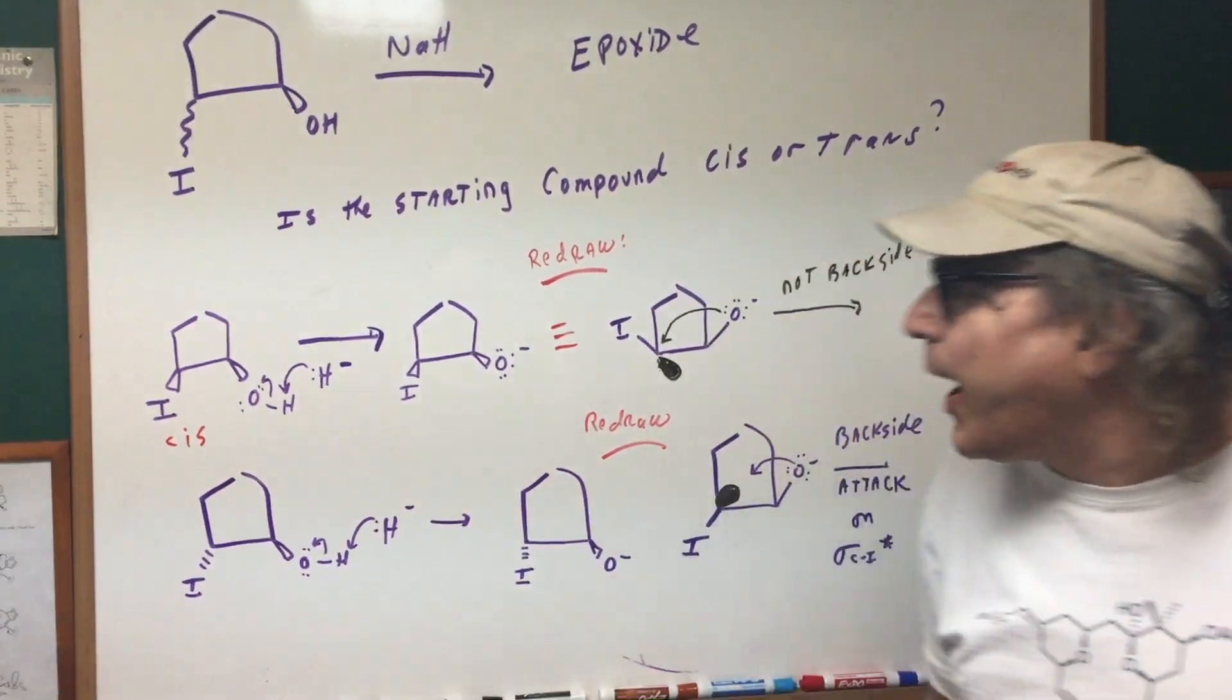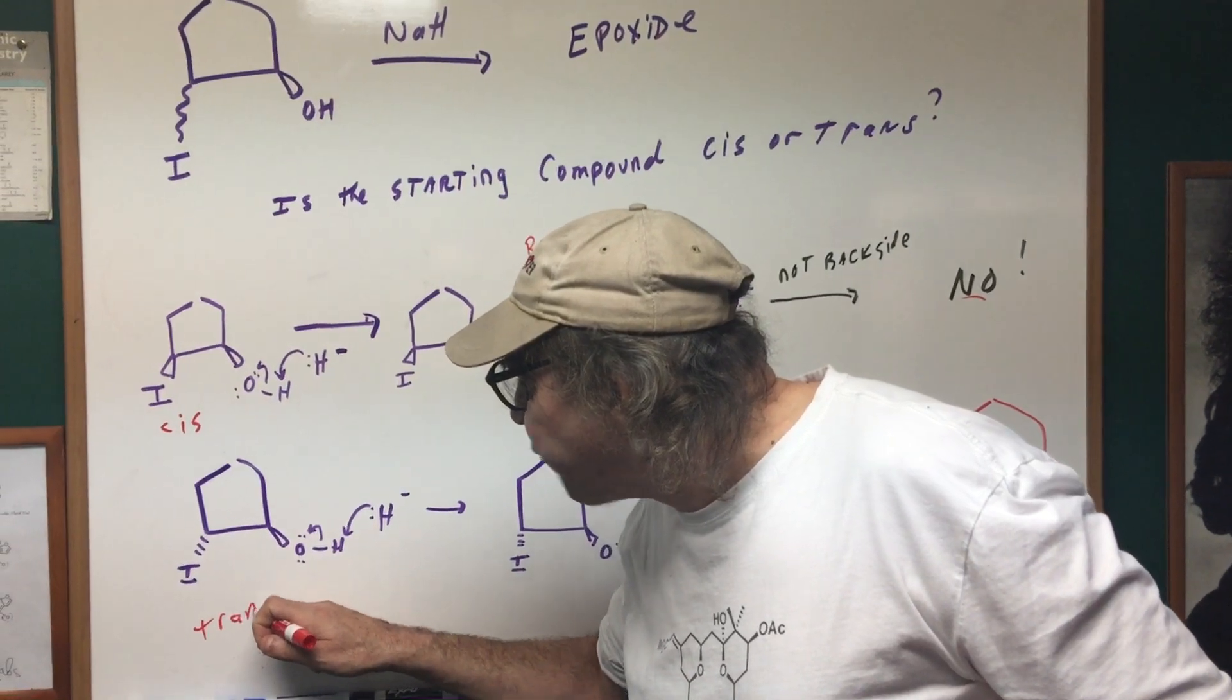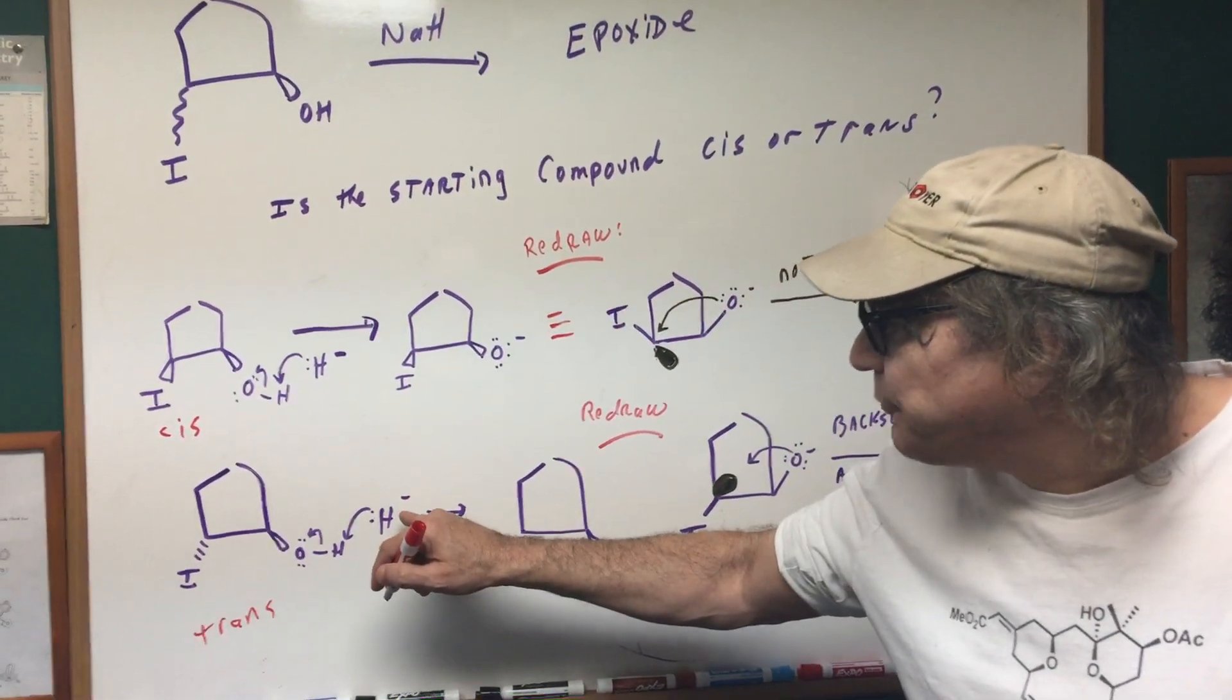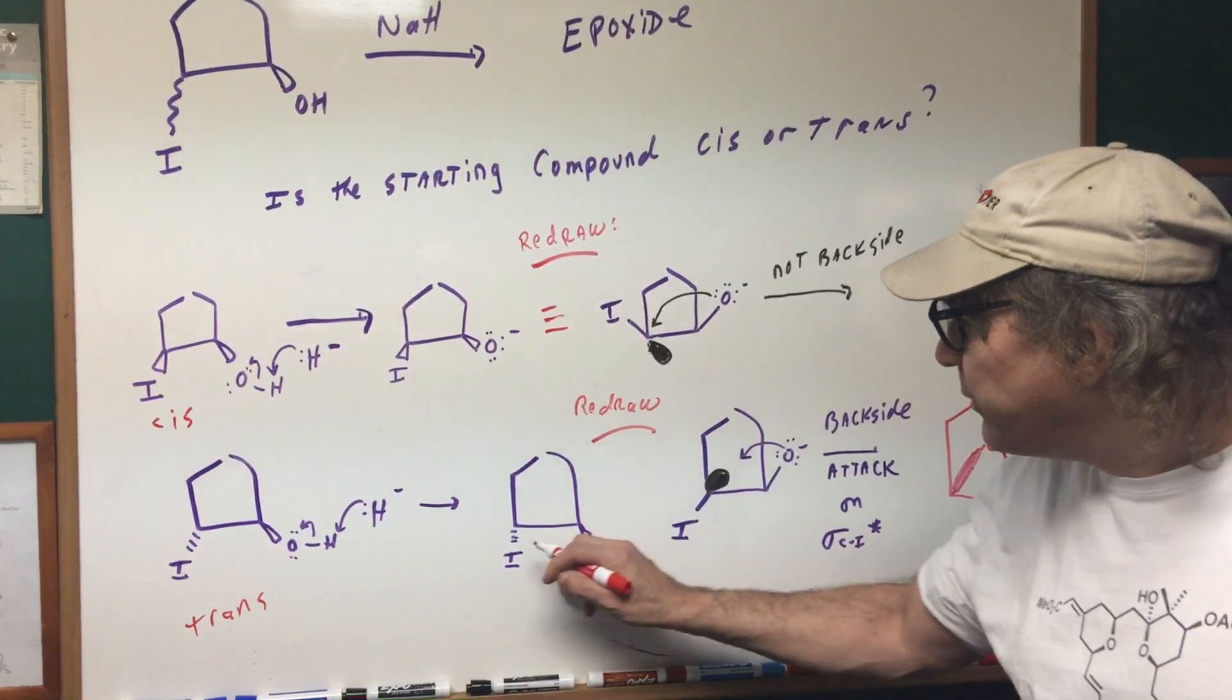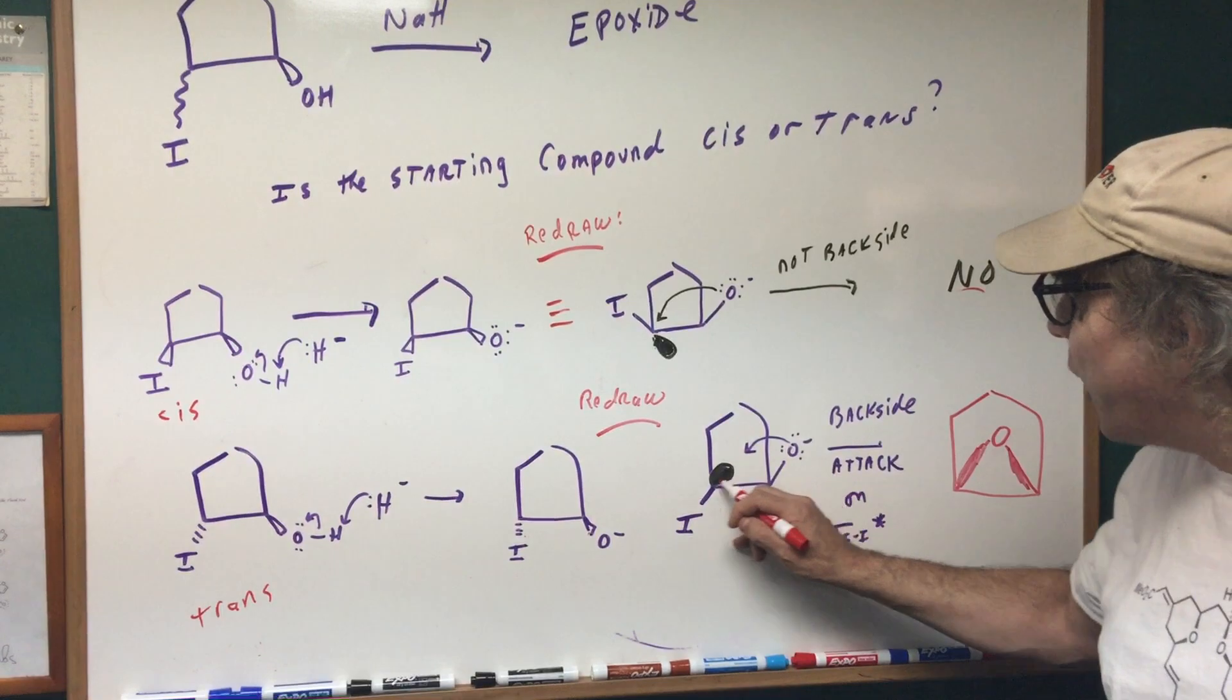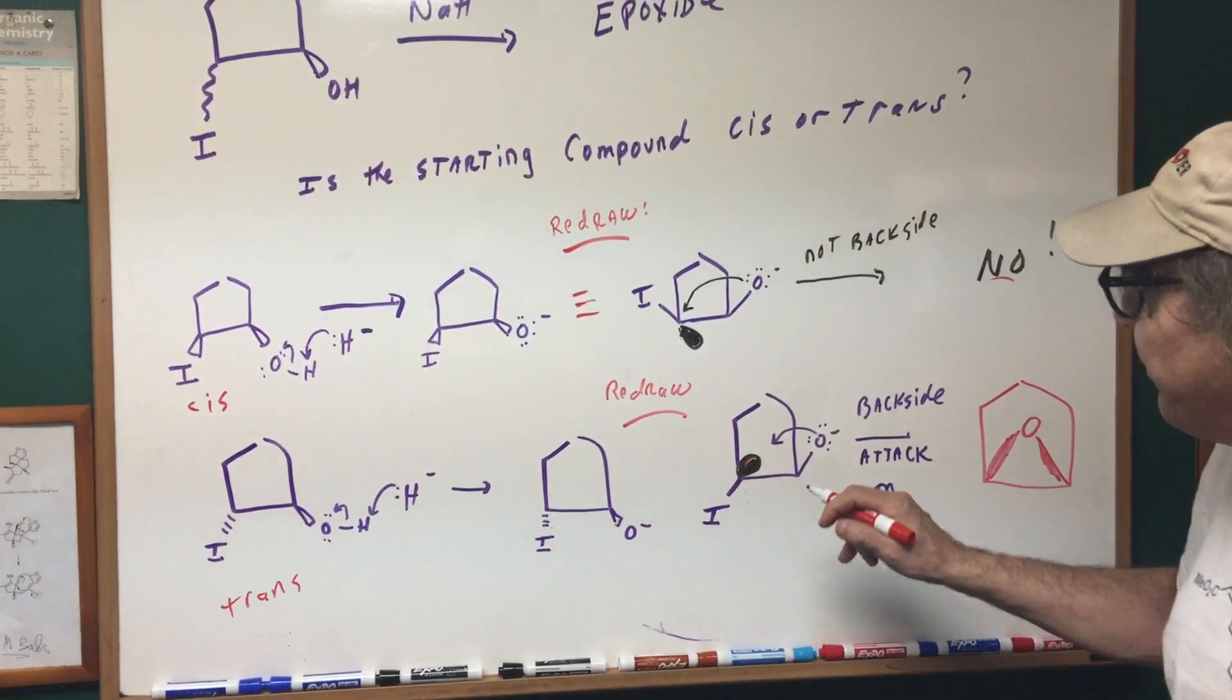So now let's try the other isomer. Let's try the trans isomer. Now if I tried the trans isomer, these are going in opposite directions. You start it off the same way. The base pulls off the H and you form an O-. Now the key thing is to redraw it. This means going down, this means up. So one's going down, one's going up, and at the rear is that anti-bonding orbital.